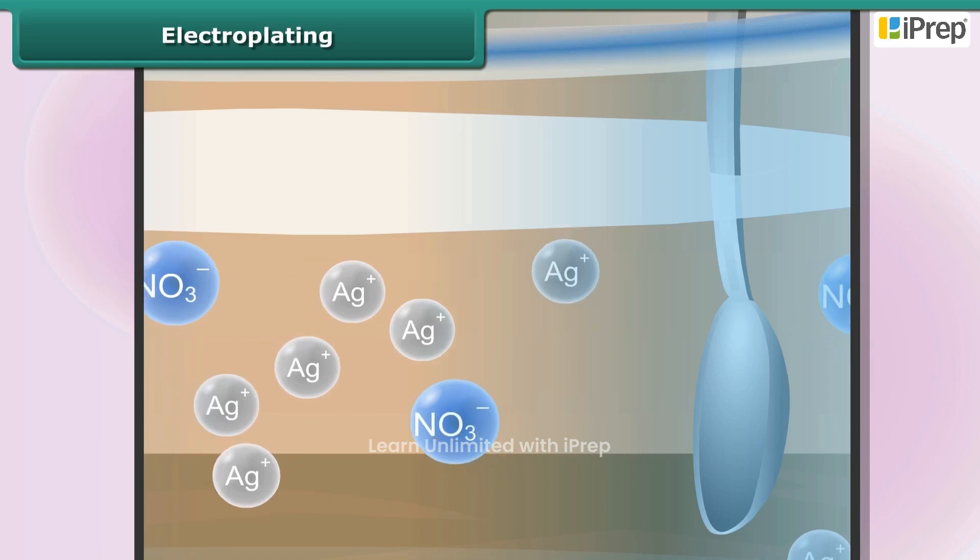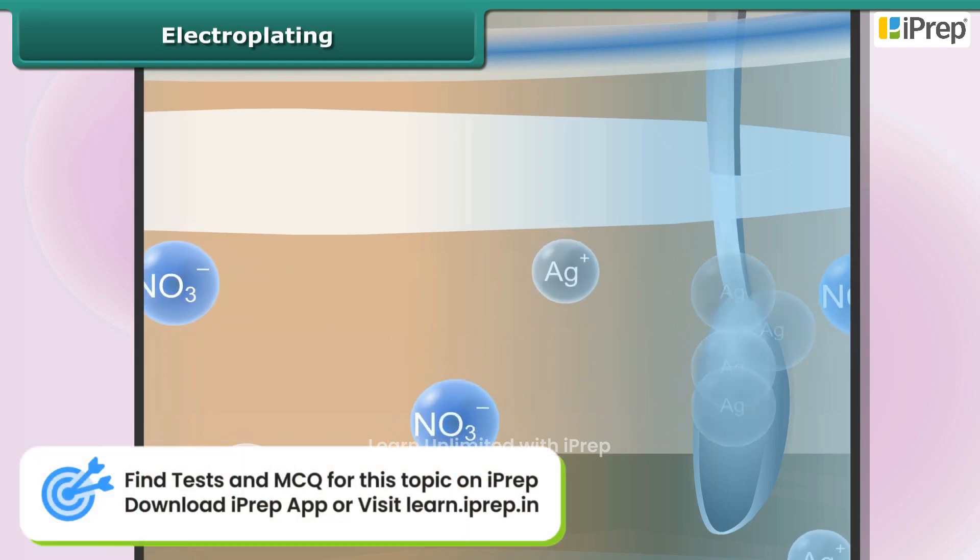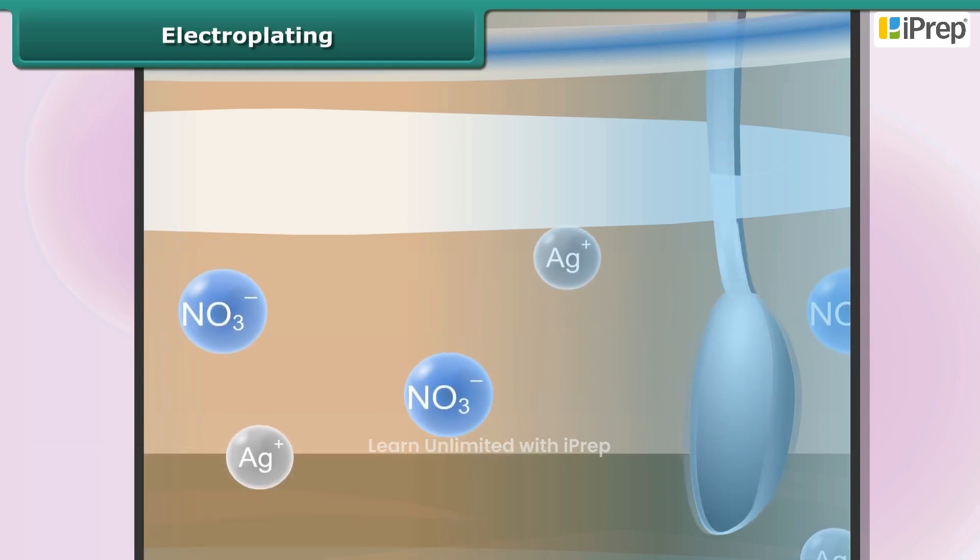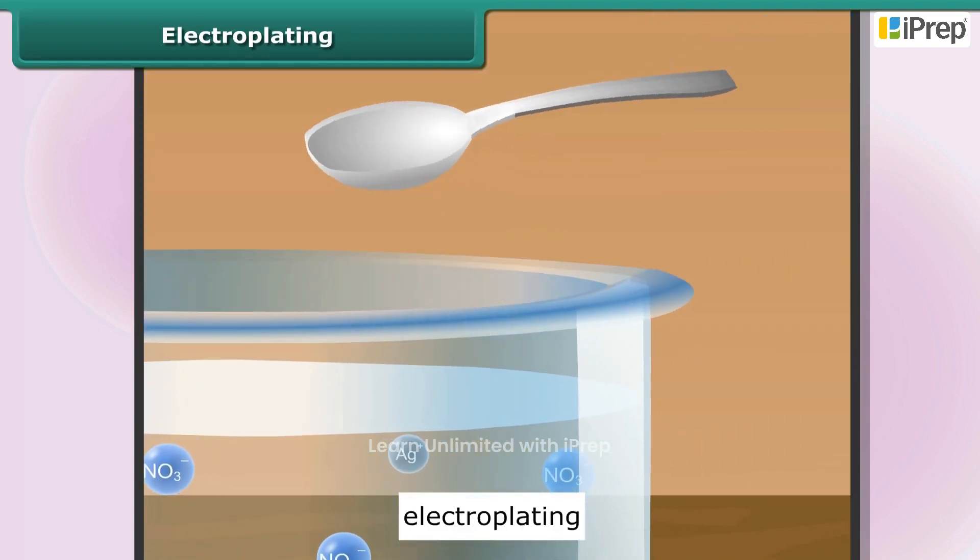The ions separate from the anode and pass into the solution. There they migrate towards the cathode, attracted by its negative charge. When they reach the cathode, they accept electrons from it and change into silver atoms which deposit onto the cathode.